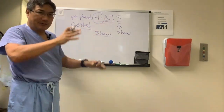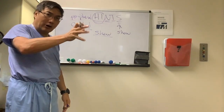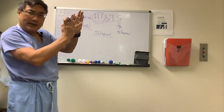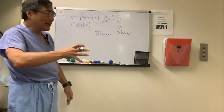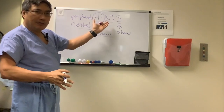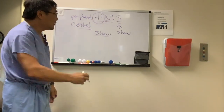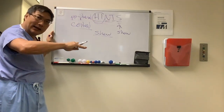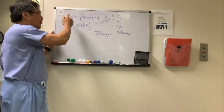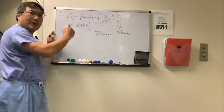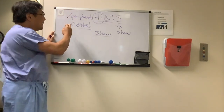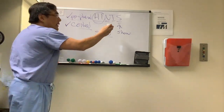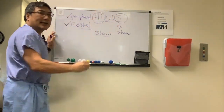For the nystagmus component: if it's purely vertical or purely rotary, the semicircular canals are not oriented in a purely pitch plane or the roll plane, and therefore they cannot cause that kind of nystagmus. If the nystagmus is horizontal, that could be the lateral canal, but it's unidirectional in peripheral causes because you only have one bad side, versus bidirectional in the central forms.